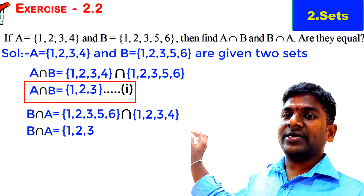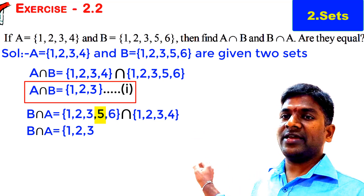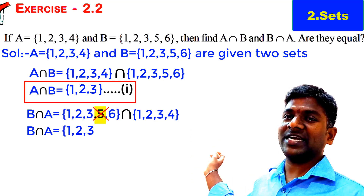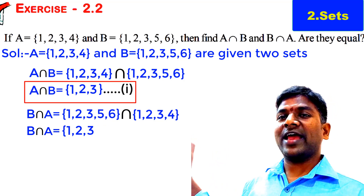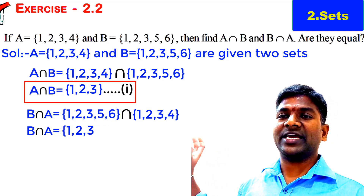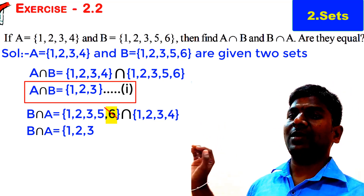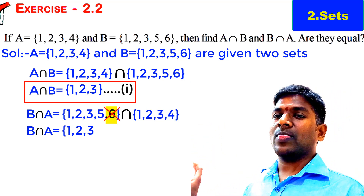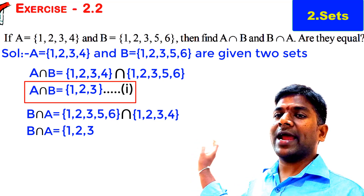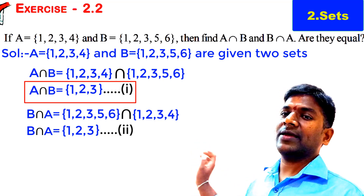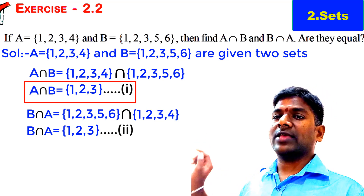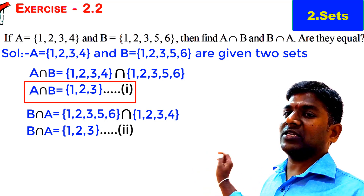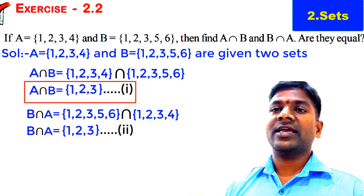Can we take 5 in B intersection A? No — 5 is an element of Set B but not in Set A, so 5 is not a common element. What about 6? 6 is also not a common element; it only belongs to Set B. So the common elements of B and A are {1, 2, 3}. Therefore, B intersection A = {1, 2, 3}.